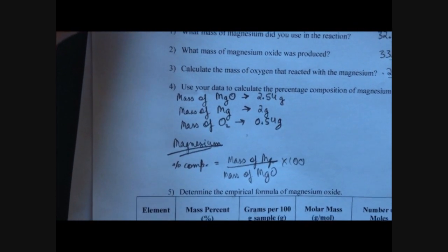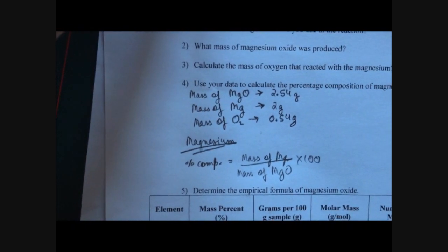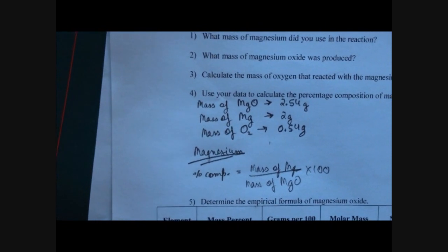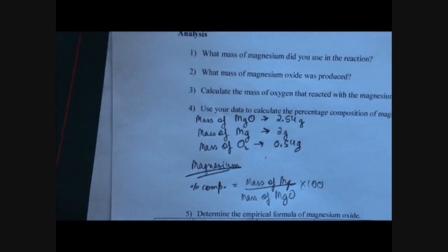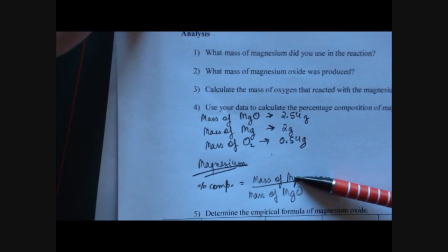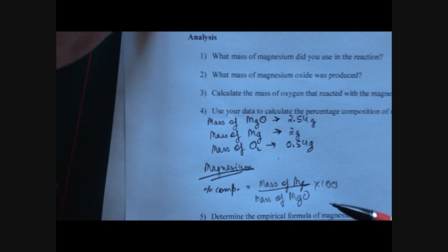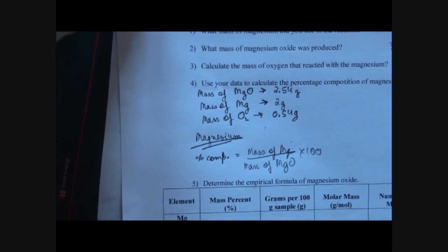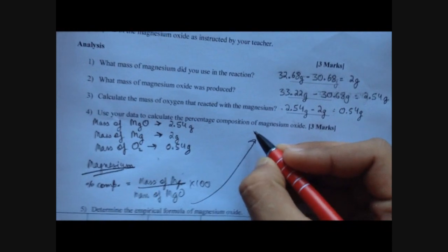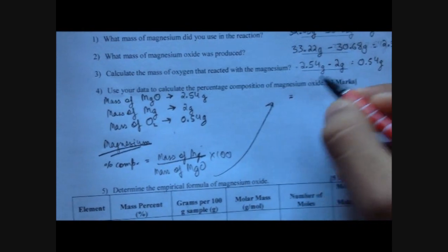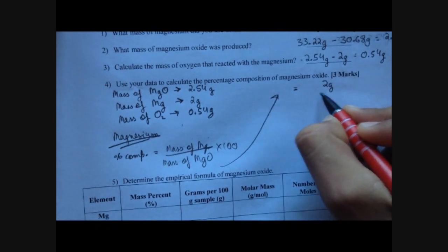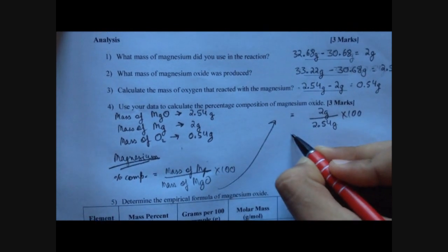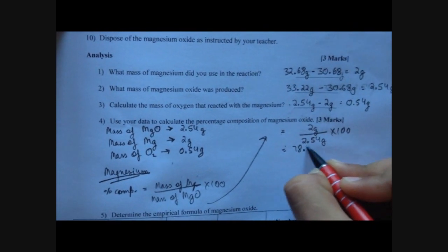This is like getting 90 out of 100 on a test — you divide 90 by 100 and multiply by 100 to get 90 percent. So we take the mass of magnesium divided by the total mass times 100: 2 grams divided by 2.54 grams times 100 gives us 78.7 percent. So 78.7% is the percent composition of magnesium in MgO.